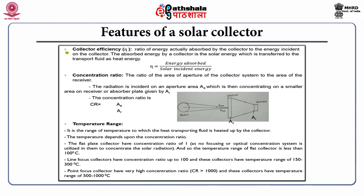The absorbed energy by a collector is the solar energy transferred to the transport fluid as heat energy. Eta equals energy absorbed divided by the solar heat energy which is incident. The next feature is the concentration ratio — the ratio of the area of aperture of the collector system to the area of the receiver. The radiation is incident on an aperture area AA, which is then concentrated on a smaller area on the receiver or absorber plate, given by AR. The concentration ratio CR equals AA divided by AR.